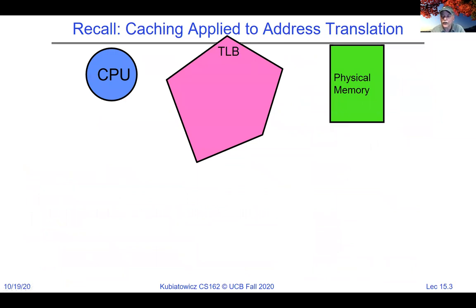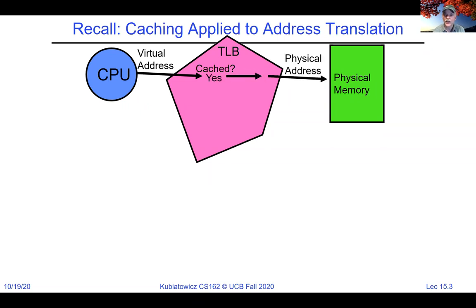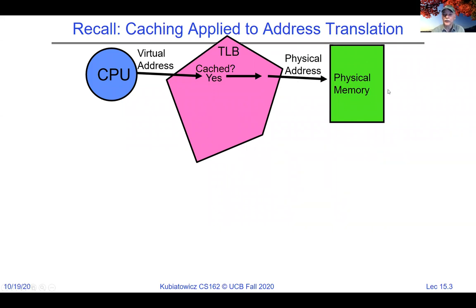We also talked about the Translation Look-aside Buffer, or TLB. We've talked about it as looking like a cache. When a virtual address comes out of the CPU, we quickly look it up in the TLB to see whether that virtual address has been cached. If yes, we can go right to physical memory — which can be a combination of cache and DRAM — and this can be very fast, at the speed of the cache. If the TLB doesn't have our virtual address, we translate through the MMU by walking the page table. Once we get the result back, we put it in the TLB, and subsequent accesses will be fast.